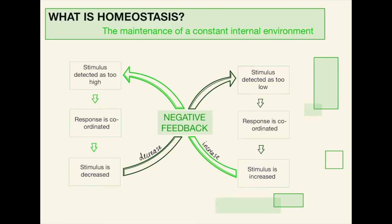First of all, what is homeostasis? Homeostasis is the maintenance of a constant internal environment. This involves controlling things such as your blood glucose concentration, temperature, body salts, and a few other things. Something for you to be familiar with is something called a negative feedback loop.